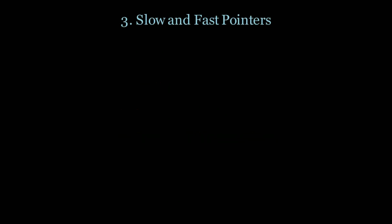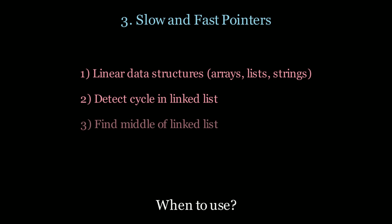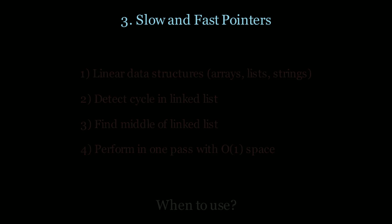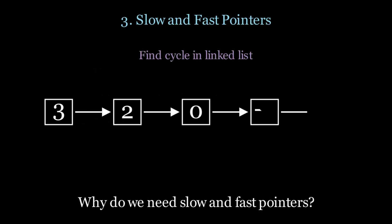Next up we have slow and fast pointers. When should you use this? If you have linear data structures, if you want to detect a cycle in a linked list, if you want to find the middle of a linked list, and finally if you want to perform all of this in one pass with O(1) space. Let's see why we need this — if we want to find a cycle in a linked list...